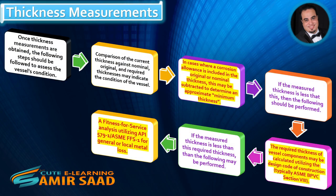Thickness Measurements: Once thickness measurements are obtained, the following steps should be followed to assess the vessel's condition. Comparison of the current thickness against nominal, original, and required thicknesses may indicate the condition of the vessel. In cases where a corrosion allowance is included in the original or nominal thickness, this may be subtracted to determine an approximate minimum thickness.